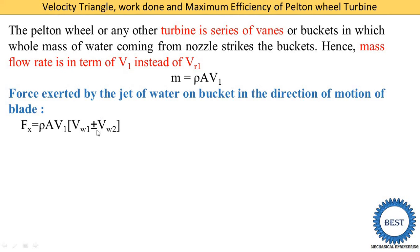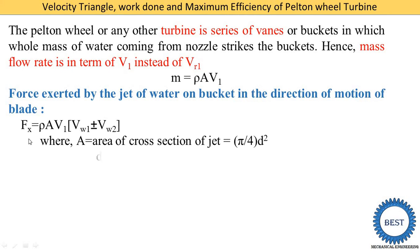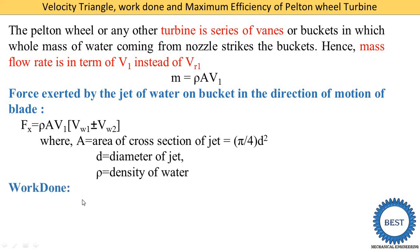We use plus when alpha 2 is less than 90 degrees, and minus when alpha 2 is greater than 90 degrees. When alpha 2 equals 90 degrees, VW2 equals 0. Here A is the cross-sectional area (pi/4 * d²), d is the jet diameter, and rho is the density of water (1000 kg/m³).